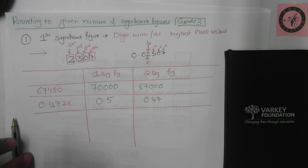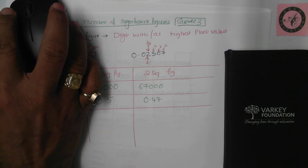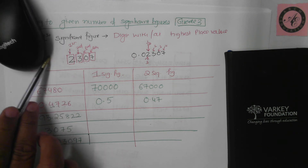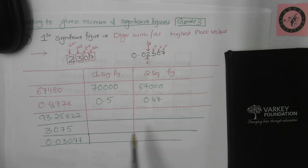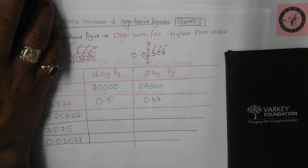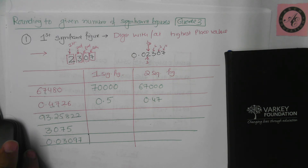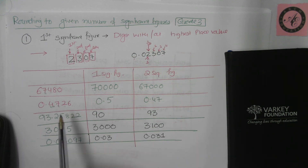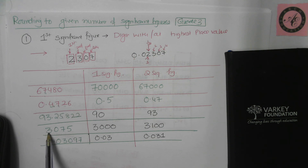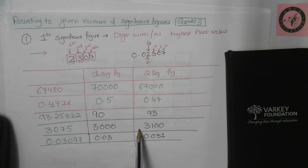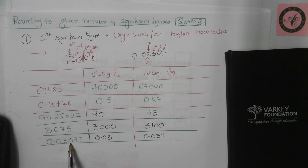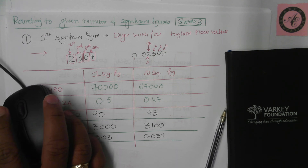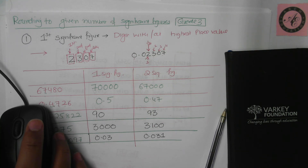Pause the video and work out these three questions: round each number to one significant figure and to two significant figures. Here are the answers: 93 to one significant figure is 90 (nearest tens), and to two significant figures is 93. For 3,142: one significant figure is 3,000 (nearest thousand), and two significant figures is 3,100 (nearest hundred). For 0.0312: one significant figure is 0.03 (second decimal place), and two significant figures is 0.031 (third decimal place). That covers all of rounding — next we'll use this in estimating answers.